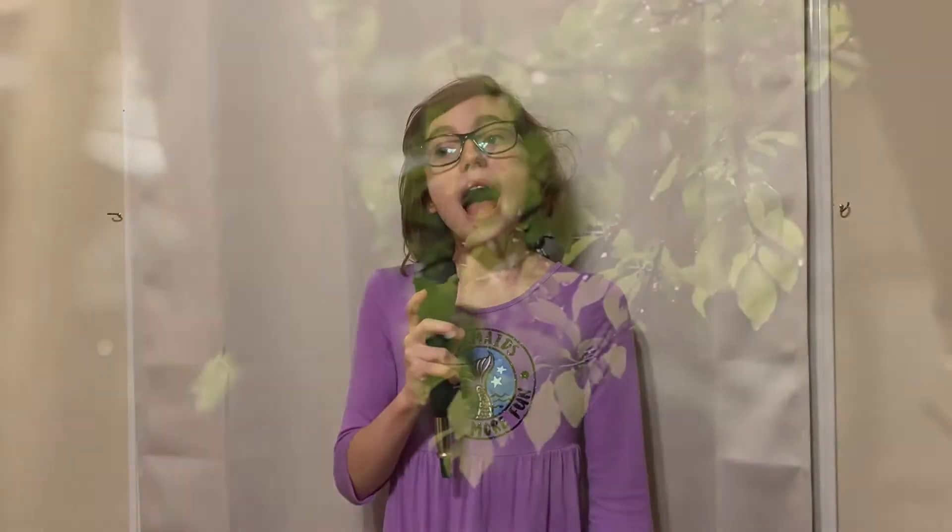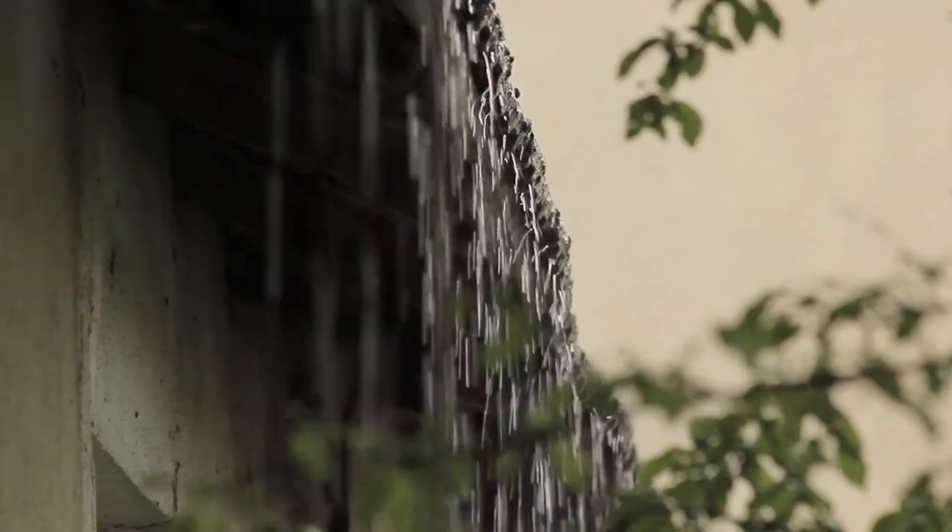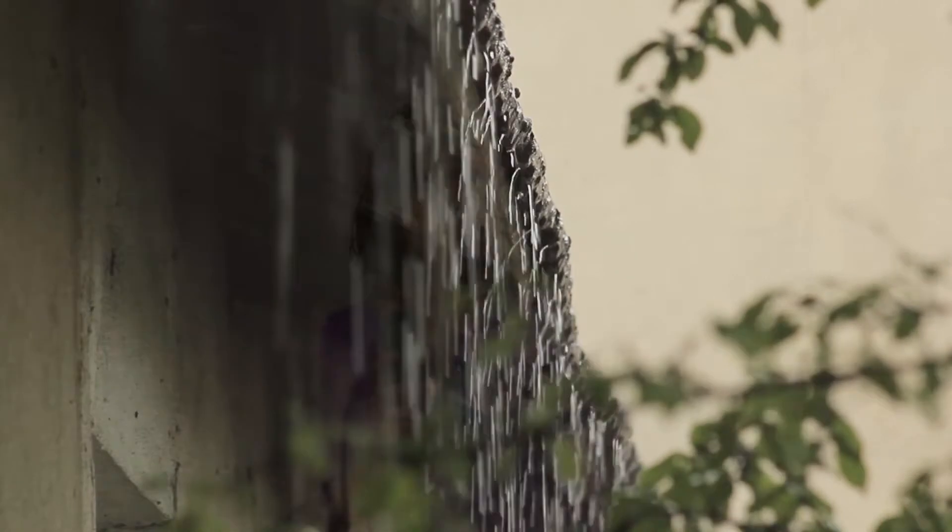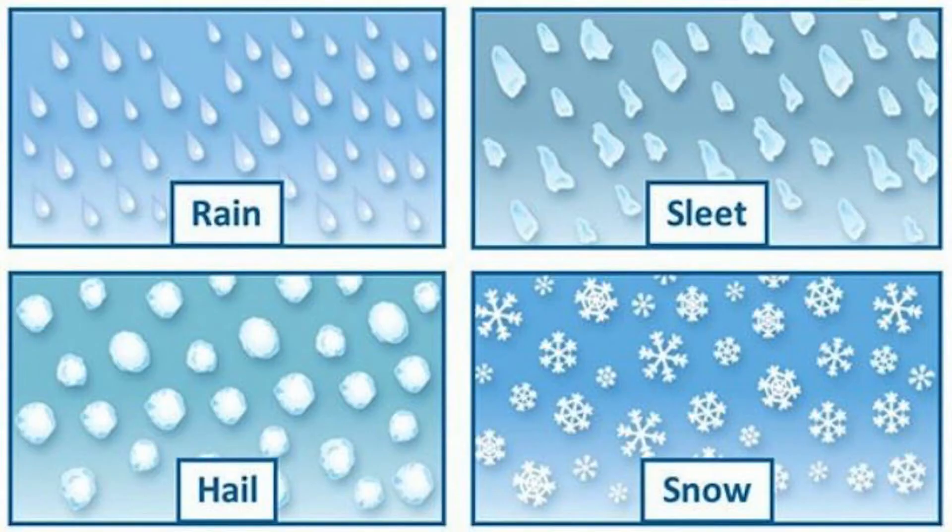The third part is precipitation, where the clouds get too heavy and either rain, sleet, hail, or snow falls. It starts off as snow because it's very cold in the sky, then turns into rain depending on the heat on Earth. But if it's getting colder, it will turn into sleet, snow, or hail again.